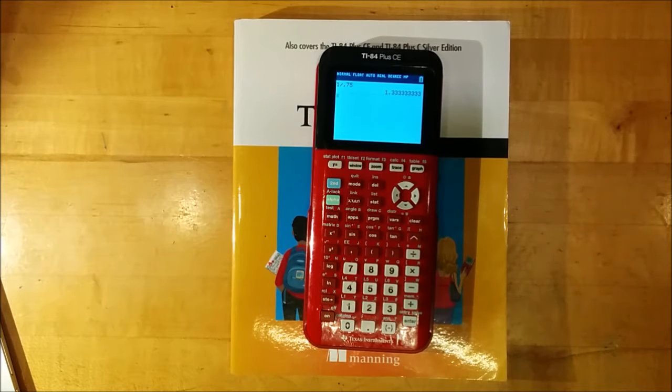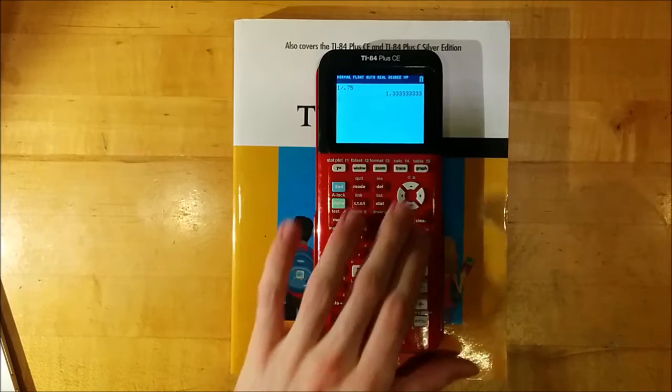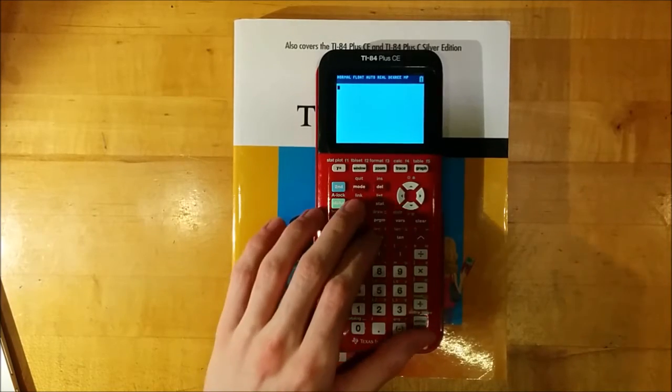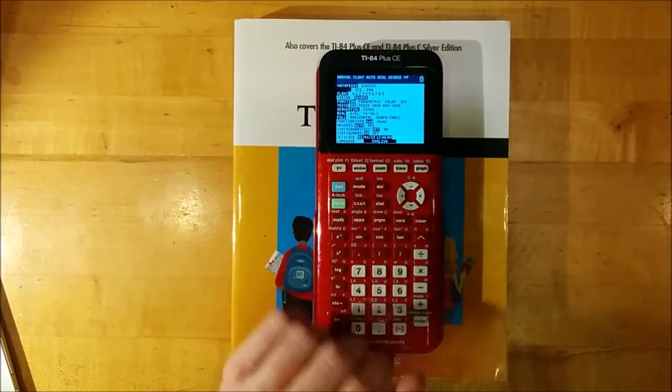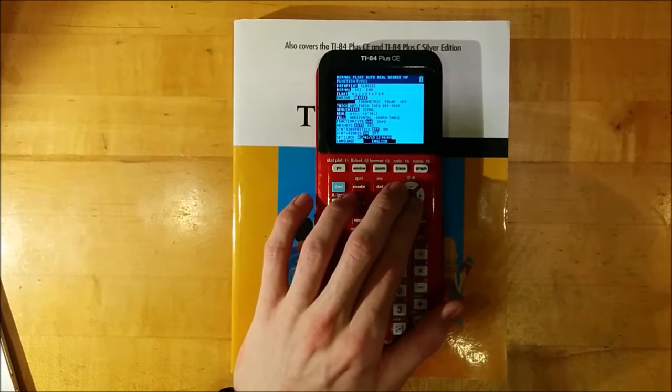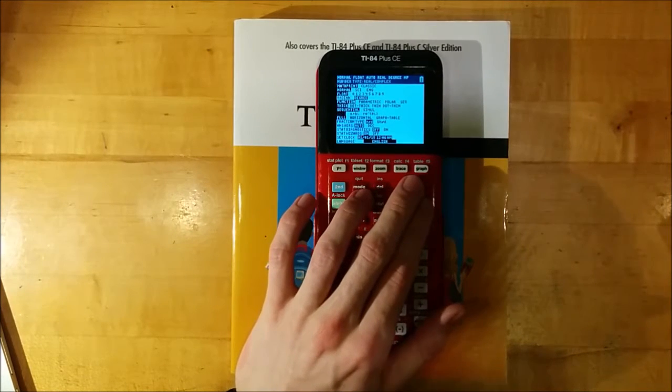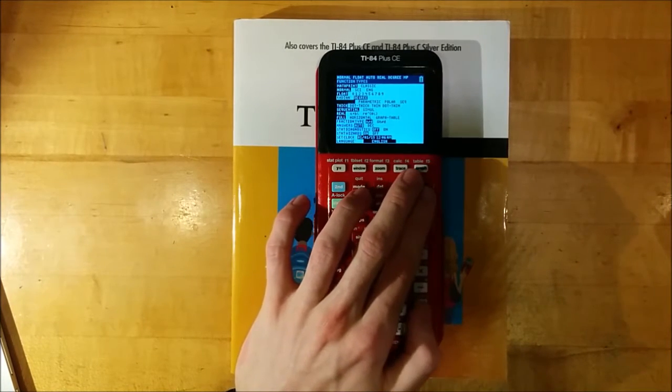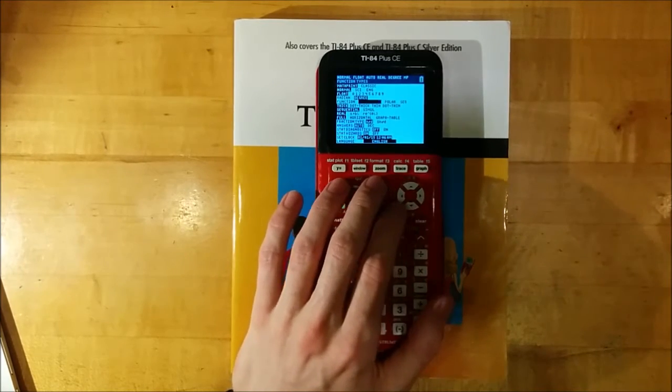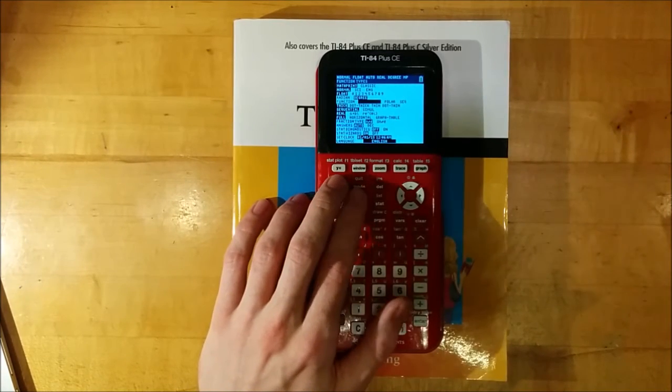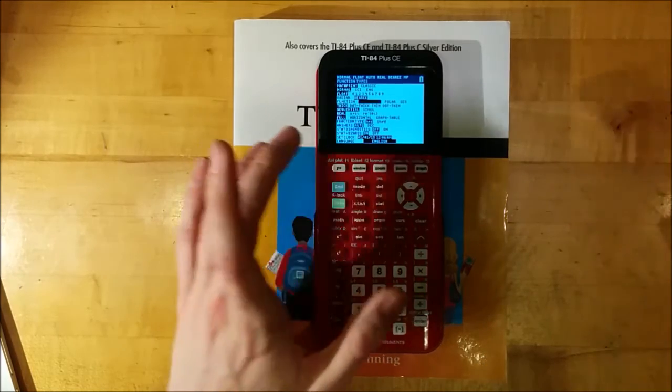Let's start with the first section, Parametric Mode, which is covered in Section 5.1 of the book. To set your calculator into Parametric Mode, first press Mode, then move the cursor down to Function, move it over to Parametric, and press Enter. Parametric will turn into white text on a black background, indicating that it has been selected.